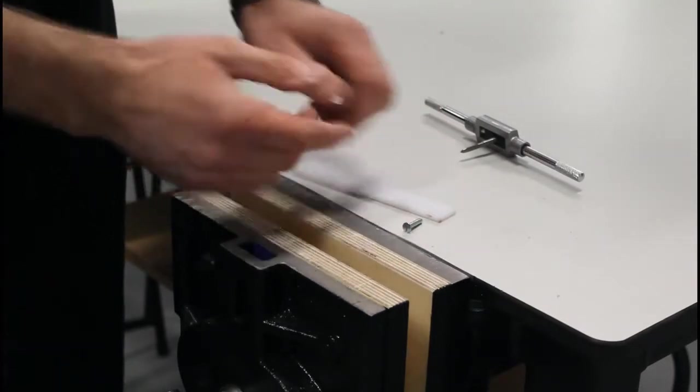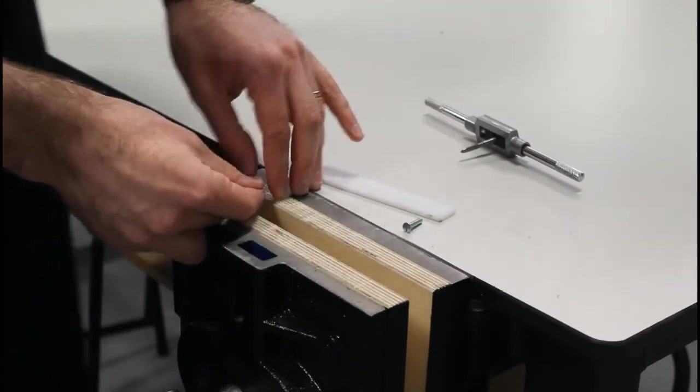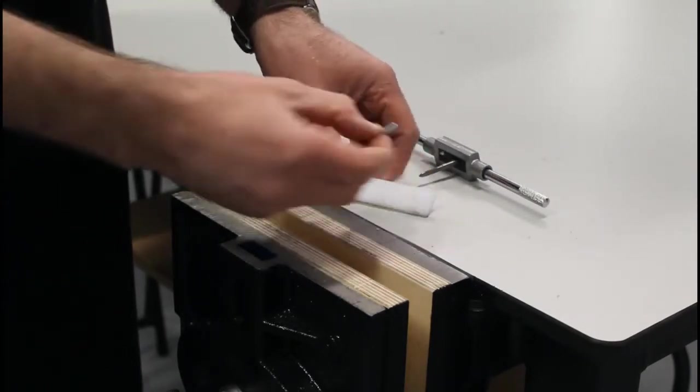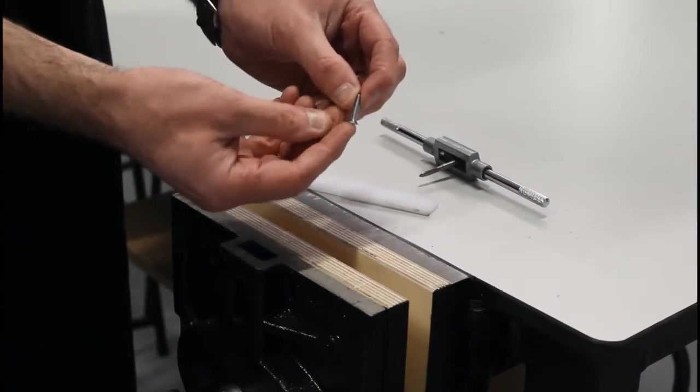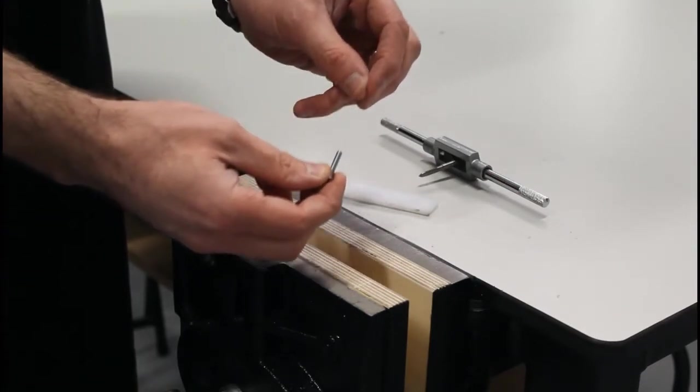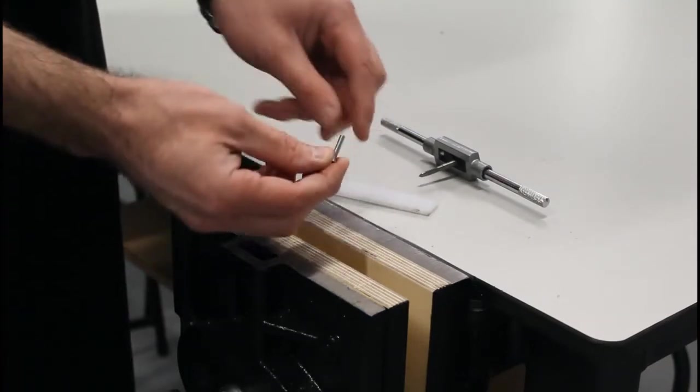So what we do is, this is a process called tapping. We're going to tap this hole. So we drill the hole. This bolt is what we call an M4, meaning that it's threaded four millimeters. So this will go through a four millimeter hole.